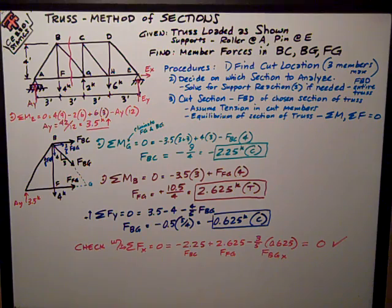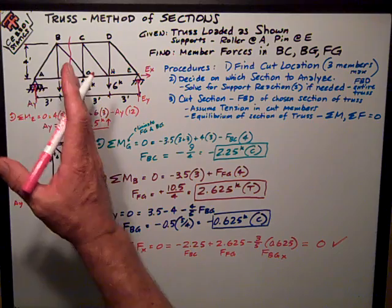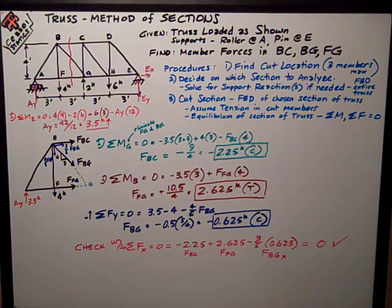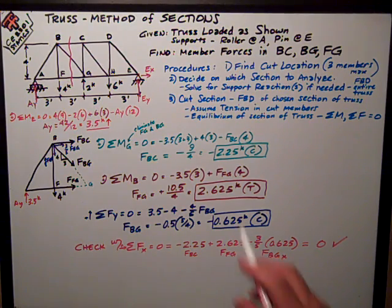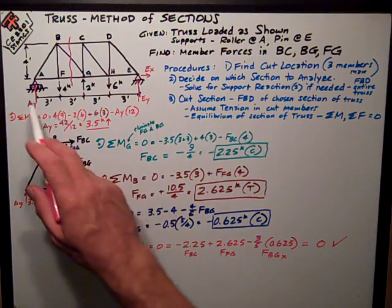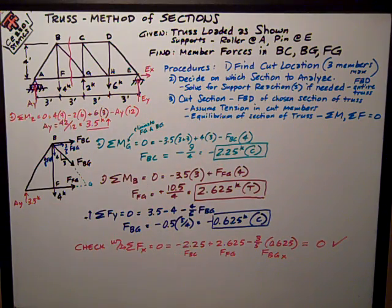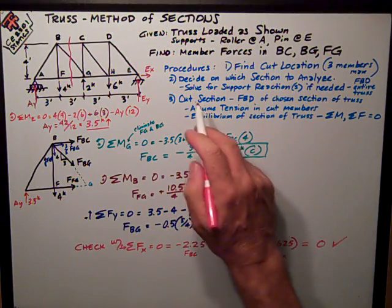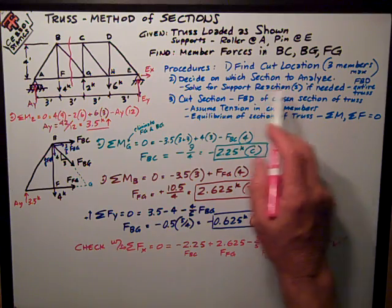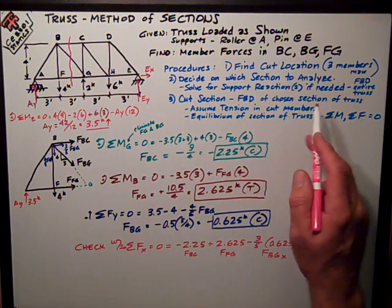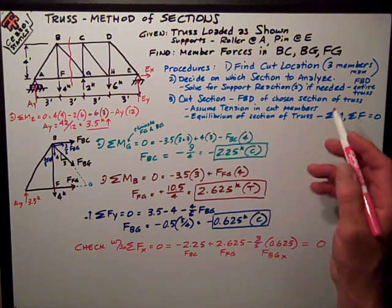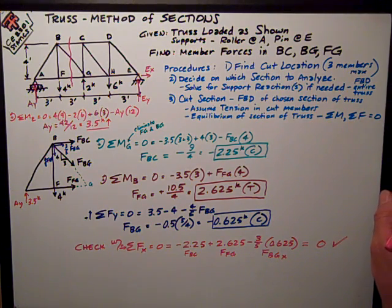So we're going to analyze the part to the left of that cut because that'll be easier. It has fewer forces to deal with. But we still need to solve for the reactions. We need at least this reaction over here at A. We don't really concern ourselves with the reactions at E, so that simplifies and speeds up the whole process. So we've decided on the section to the left, and we're going to analyze the reactions at A. Sometimes you don't need any of them. Sometimes you need both of them. But we're just going to try to make an efficient, intelligent decision on that.